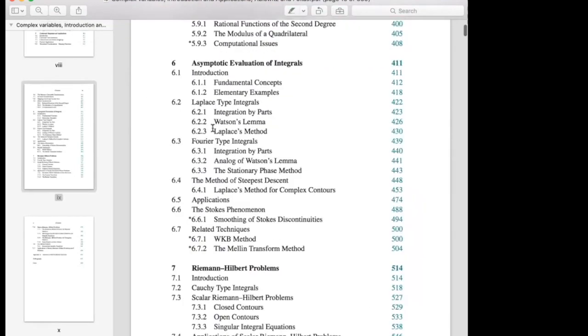So then you have this chapter six on asymptotics. It's much bigger than the appendix in Stein and Shakarchi. It has a lot of great methods that are very important. Stationary phase, and discussion of the Stokes phenomenon, and people who learn quantum mechanics will be familiar with this WKB method.